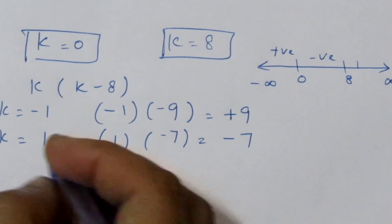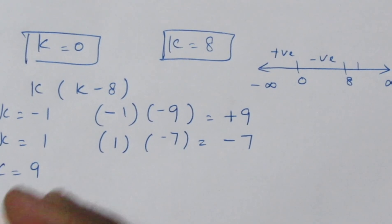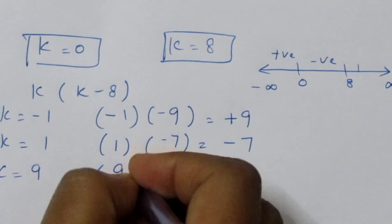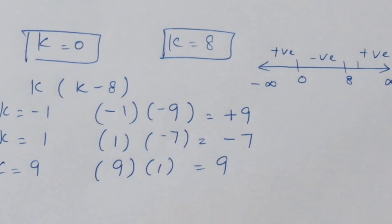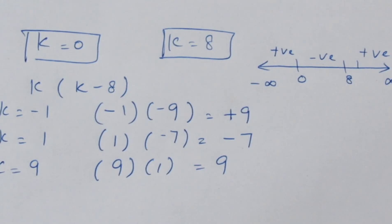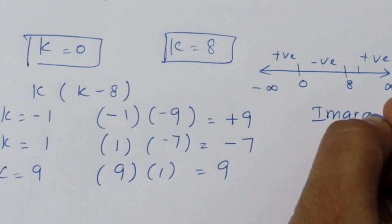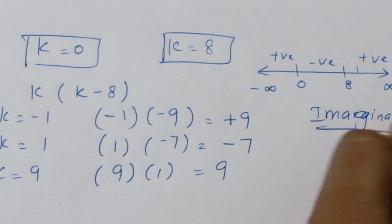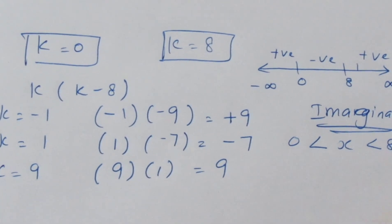So substituting a value less than 0 gives positive, and substituting a value between 0 and 8 gives negative. When we substitute k equals 9, that is greater than 8, we get positive. So the sign is negative between 0 and 8. Negative discriminant means imaginary roots, so for 0 less than k less than 8, roots are imaginary.